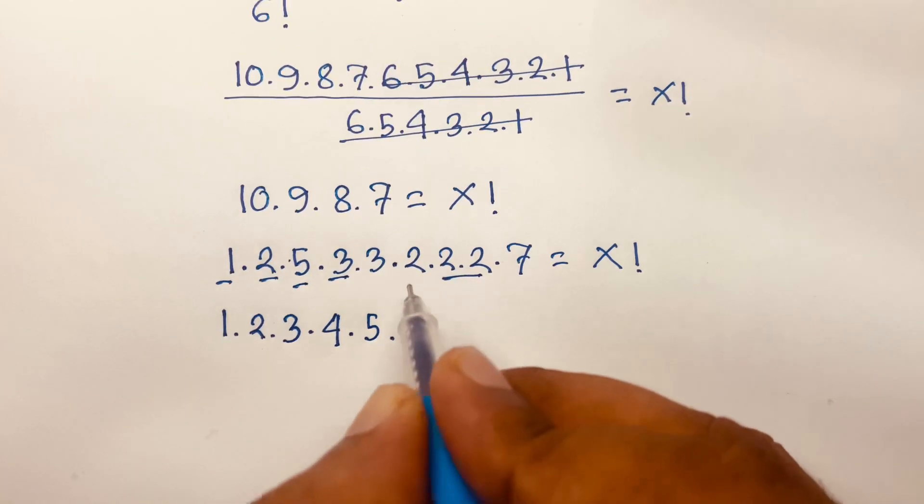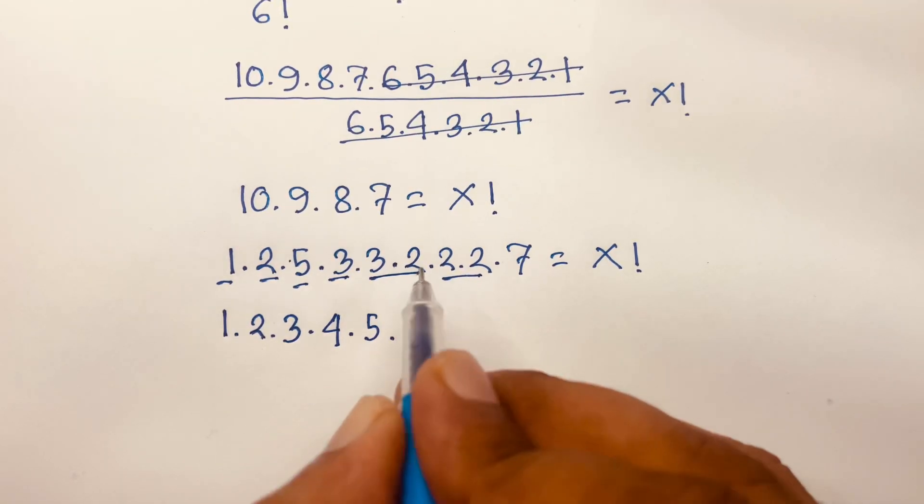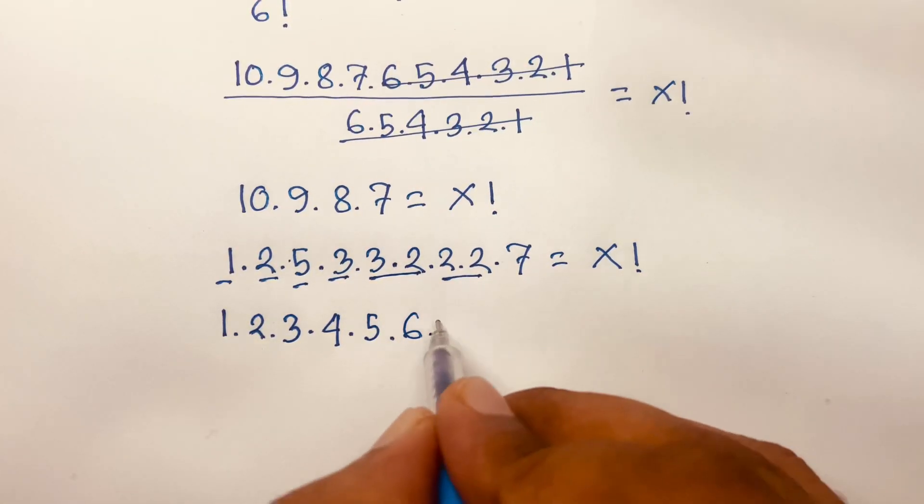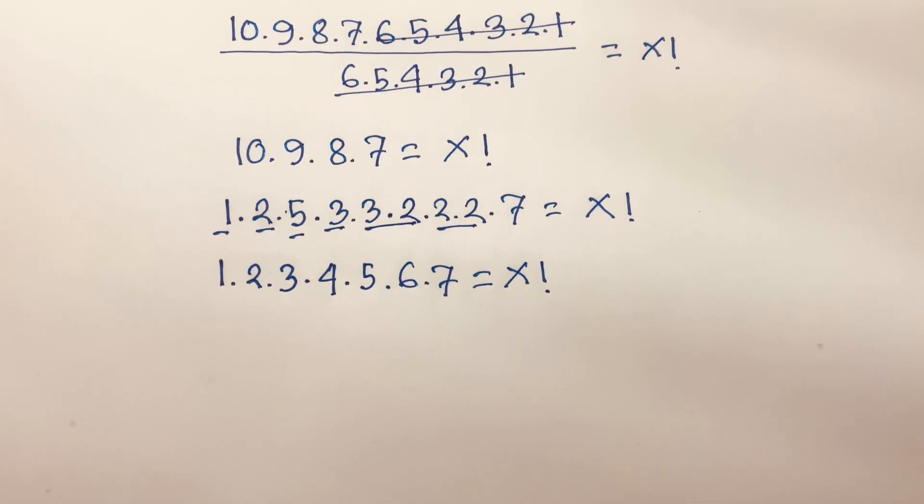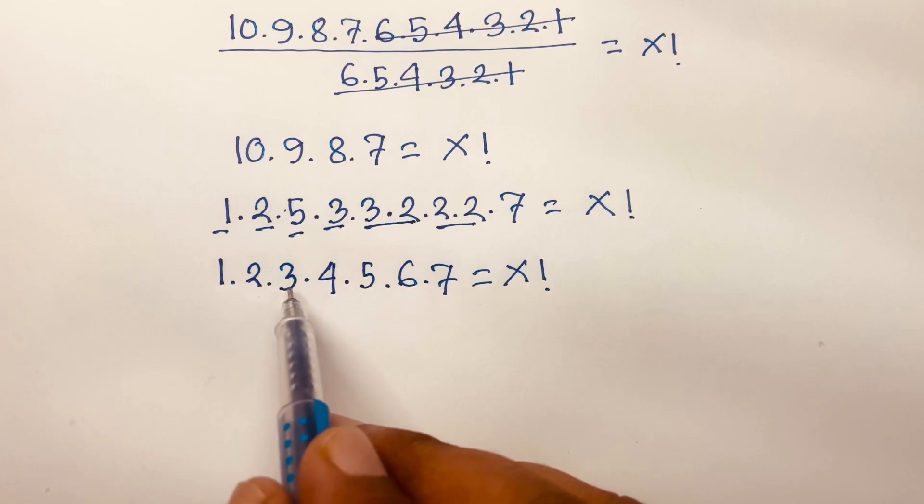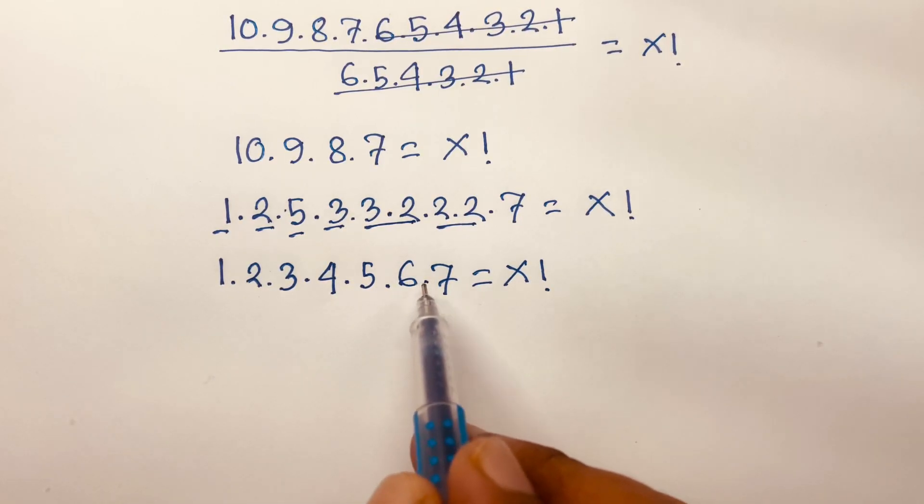This 5 times 1 of that 3 times 2 will be 6, times this 7 is equal to x factorial. Then I can see easily 1 times 2 times 3 times 4 times 5 times 6 times 7.